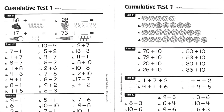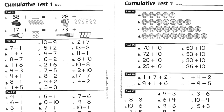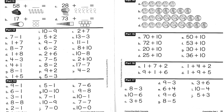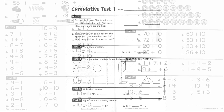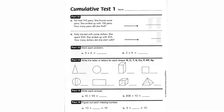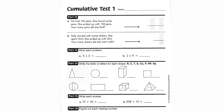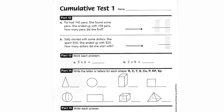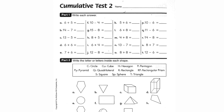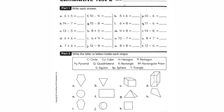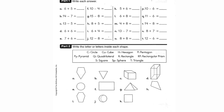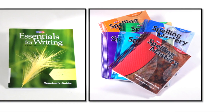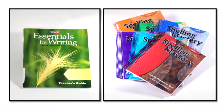In addition to mastery tests, several DI programs contain cumulative tests, which summarize the material covered over a much larger number of lessons than the mastery tests. Each level of the Connecting Math Concepts program contains a mid-level cumulative test, which assesses students' knowledge of the first half of that level, and an end-of-level cumulative test, which assesses students' knowledge of the whole level, with a strong emphasis on material covered in the second half of the level. Spelling Mastery and Essentials for Writing also contain end-of-level tests.